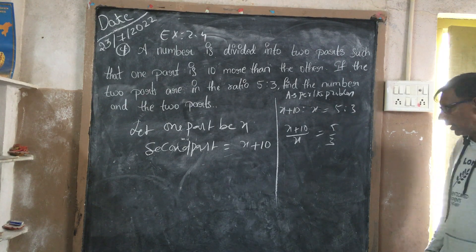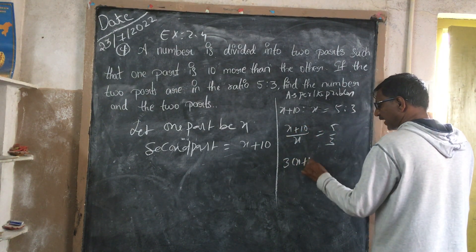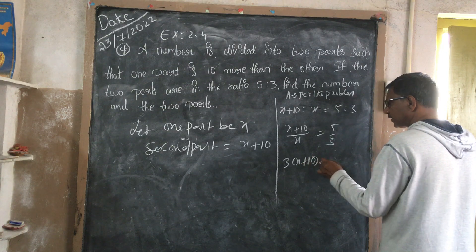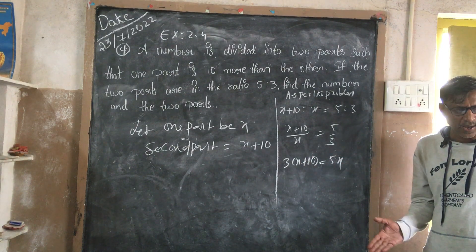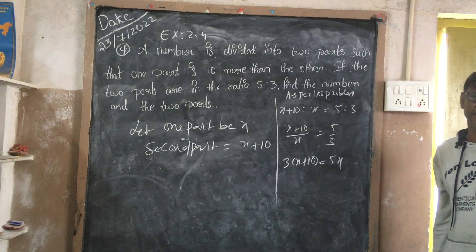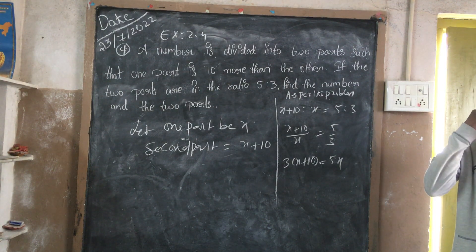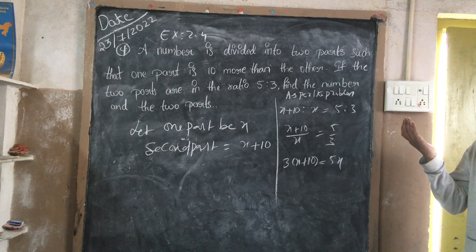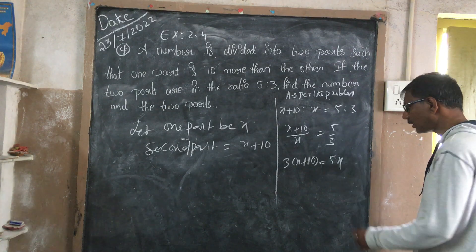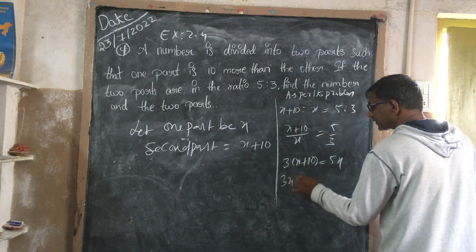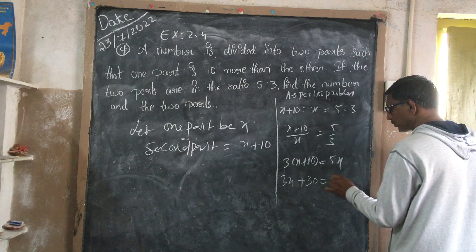So, this is multiplied by this: 3 times (X plus 10) is equal to 5 times X. Now I have a linear equation. You know how to do it from yesterday when I explained how to simplify a linear equation. Expanding: 3X plus 30 is equal to 5X.